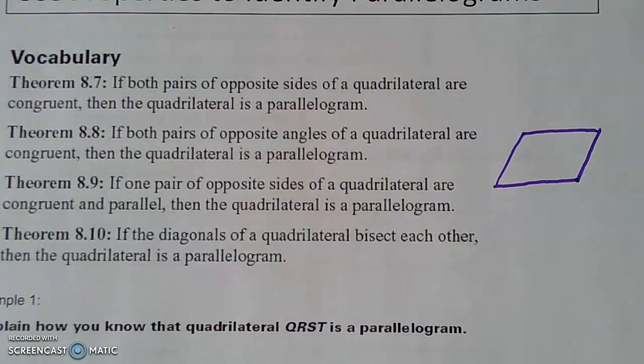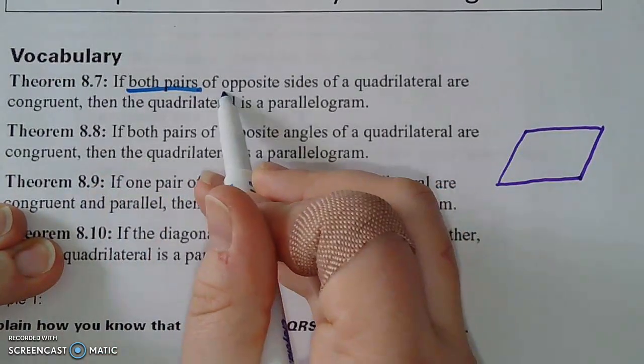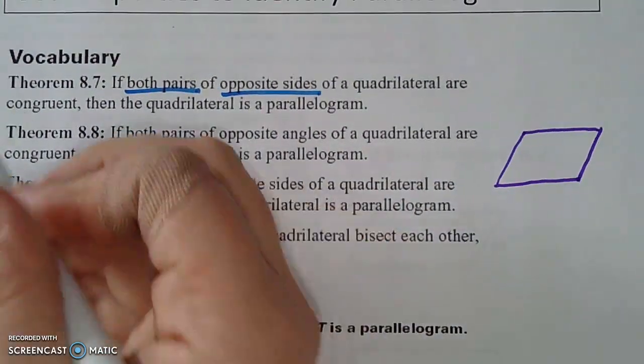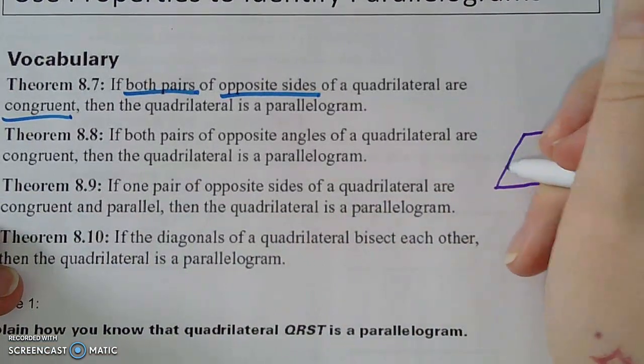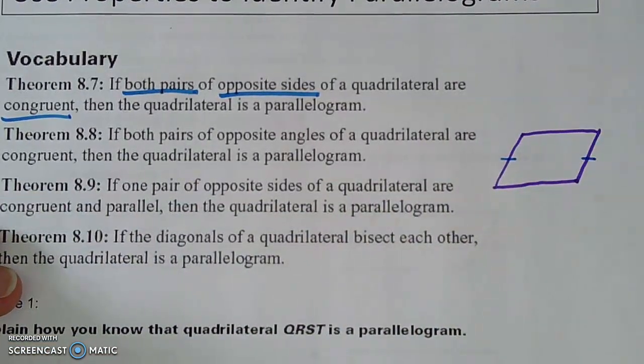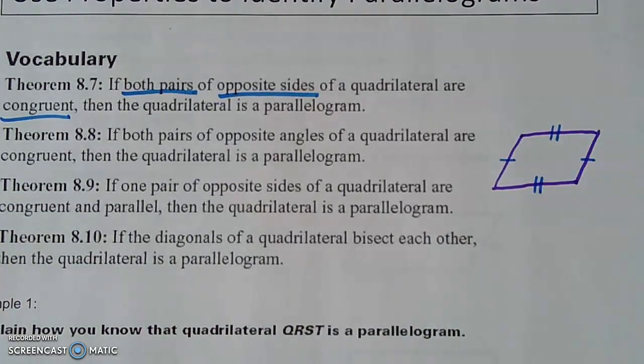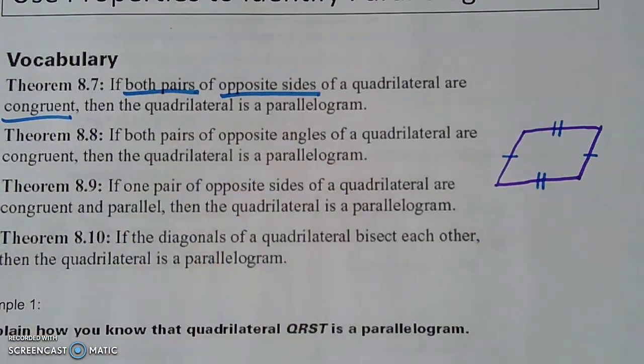So the first one says, if both pairs of opposite sides of a quadrilateral are congruent, so if this side is congruent to this side, and this side is congruent to this side, then the quadrilateral is a parallelogram.